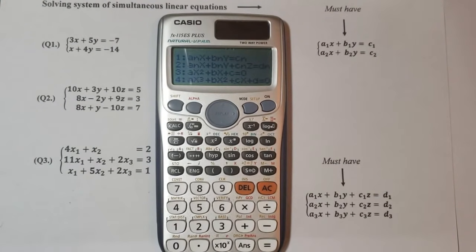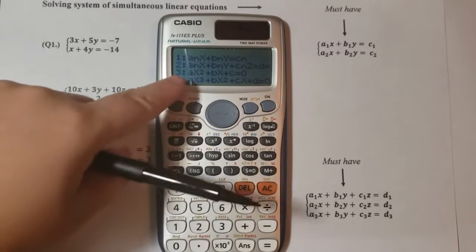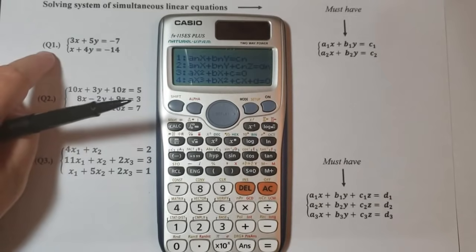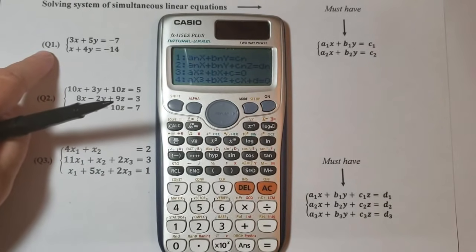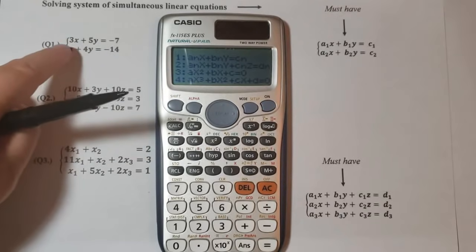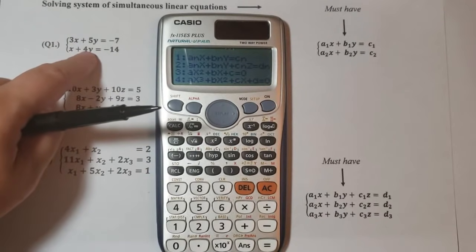Now we can see that we have four choices here on the calculator. The first choice is the one that we will use for our first question here. We can see two equations and two unknowns, x and y.